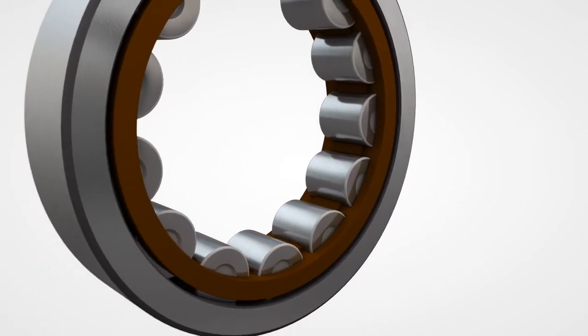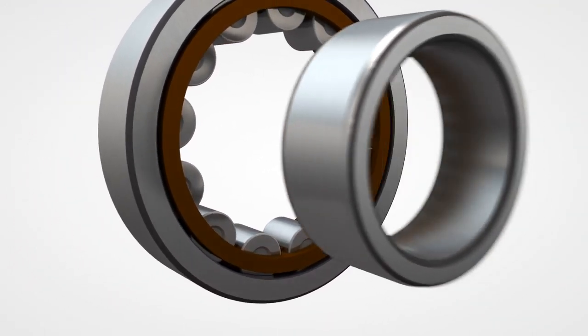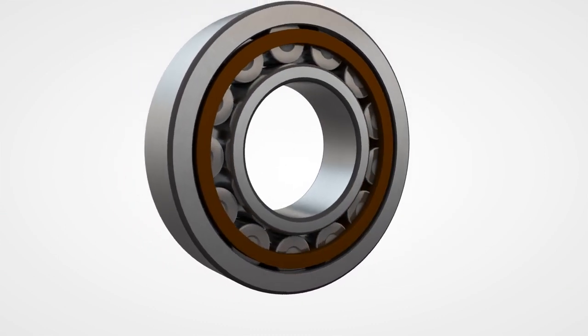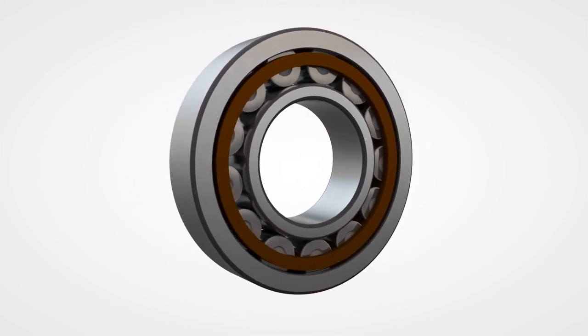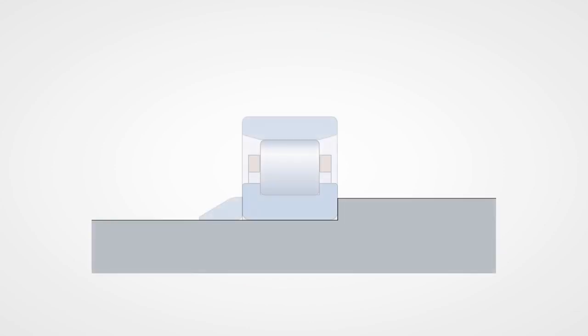This type of bearing is designed for accommodating high radial loads at high speeds. This bearing is always used in conjunction with an axially locating bearing to ensure the shaft is properly supported.